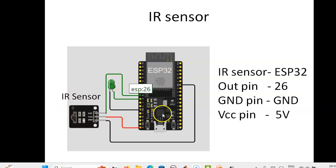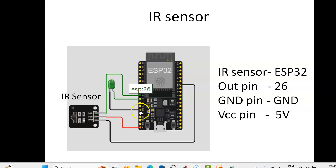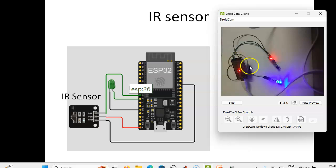This is the hardware connection: the IR sensor is connected to ESP32 on pin number 26. The IR sensor VCC pin is connected to 5V and the ground pin is connected to ESP32 ground. The output device — an LED — is connected to pin 27, with the negative lead connected to ground. This is the hardware connection made, with the IR sensor interfaced with ESP32.